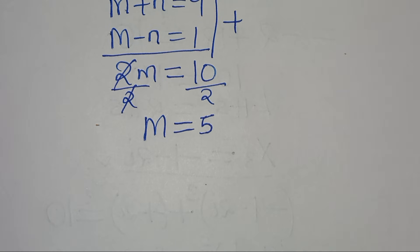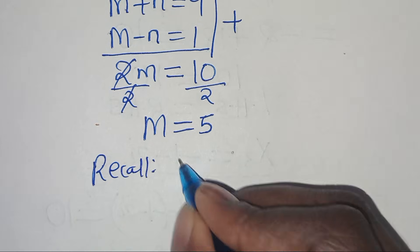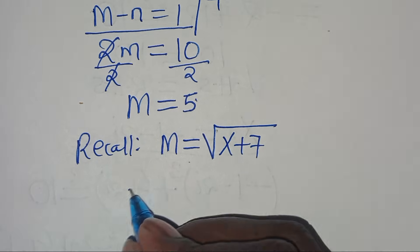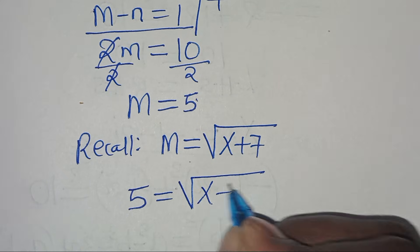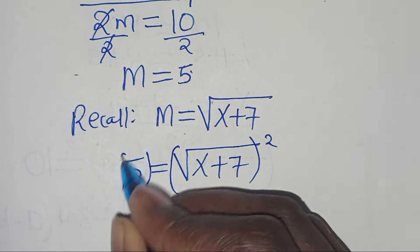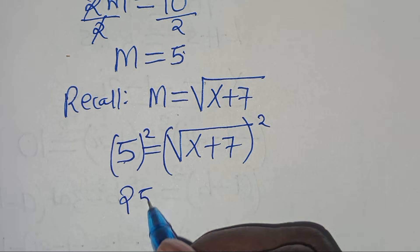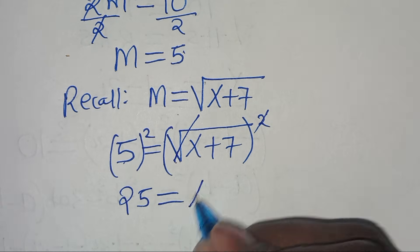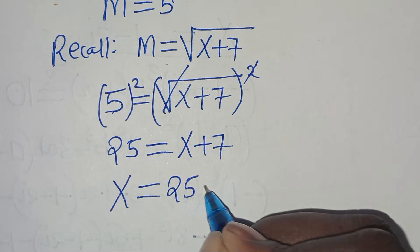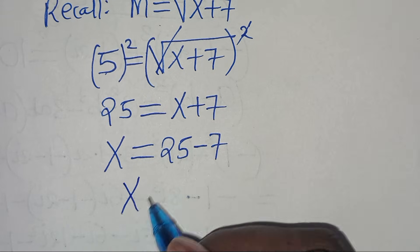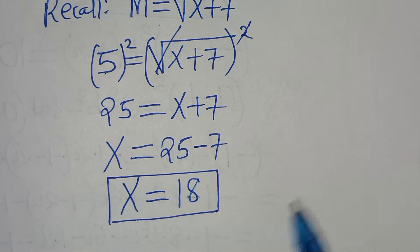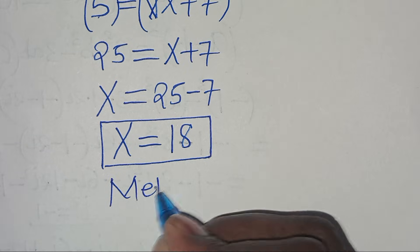Dividing both sides by 2, m equals 5. Recalling that m equals the square root of x plus 7, substituting gives us 5 equals the square root of x plus 7. Squaring both sides: 25 equals x plus 7, so x equals 25 minus 7, which equals 18. This is the value of x by applying Method 1. Let's proceed to Method 2.